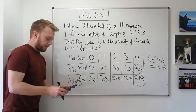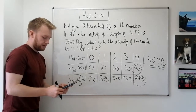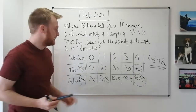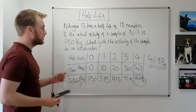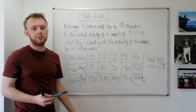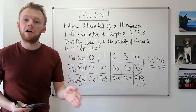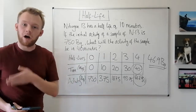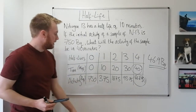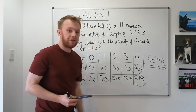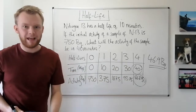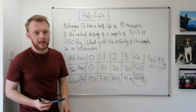Now, 750 divided by four is not 46.9 Becquerels — it's 187.5. So be careful: don't just see four half-lives in 40 minutes and divide by four. You're halving, and halving, and halving, and halving each time. So actually that's a half, then a quarter, then an eighth, then one-sixteenth of 750. A very easy source of errors.